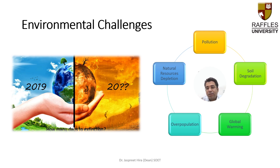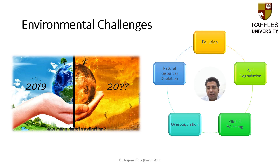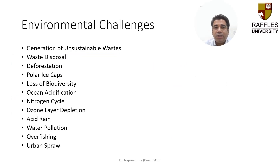This figure shows projections for the years 2029, 2050, 2070, and 2080, illustrating how global temperature is increasing and how it is deteriorating the environment. Key environmental challenges highlighted in this slide include pollution, soil degradation, global warming, overpopulation, and natural resource depletion. In this course we will study how various pollutants affect the environment, how soil is being degraded, and at what pace global warming is taking place.